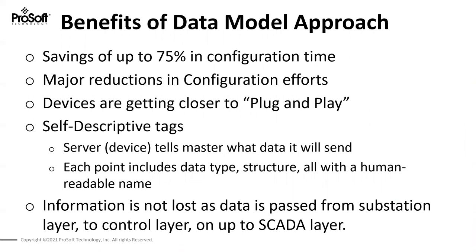By having these self-descriptive tags, you can get savings of up to 75% in configuration time, with major reductions in configuration effort. We're getting a lot closer to plug-and-play, which helps get these devices online, troubleshoot, and commission much quicker. The self-descriptive tags and configuration language are a starting point for that. As you're passing this information up through different layers of your automation scheme — from the controller up to the data layer — you don't lose any of this information.